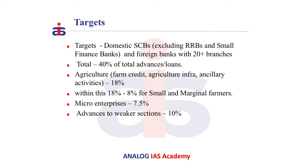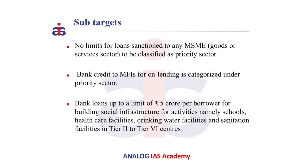Within this 18% for agriculture, 8% should be for small and marginal farmers. Next, for micro enterprises it is 7.5%, and for advances to weaker sections it is 10%.